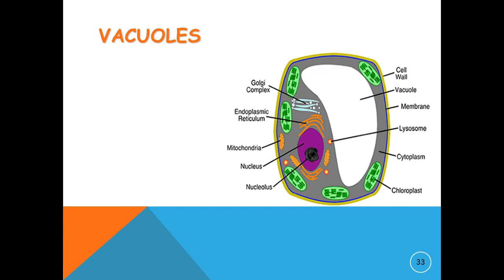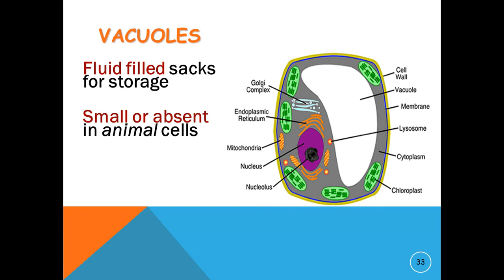Vacuoles are membrane-bound organelles. They are a kind of vesicles. Vacuoles are closed sacs made up of membranes with inorganic or organic molecules inside, such as enzymes. They have no set shape or size, and the cell can change them as needed. They are in most eukaryotic cells and do many things.